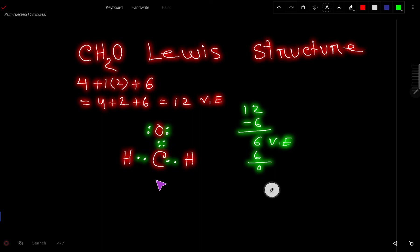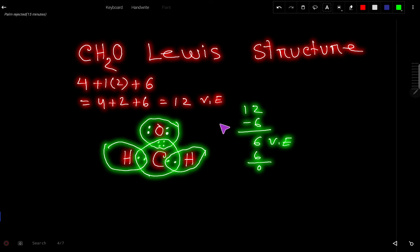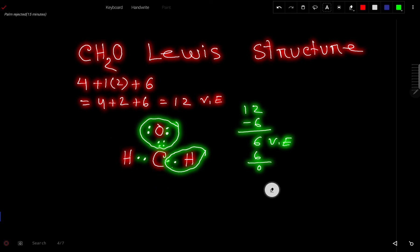Now count: oxygen has eight valence electrons, carbon also has eight valence electrons, and both hydrogens have their duets satisfied. So this is the best Lewis structure of methanol, formaldehyde, or CH2O.